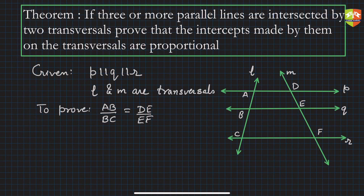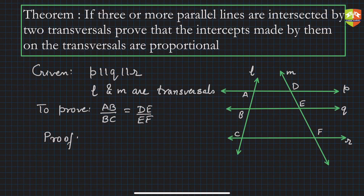Since ratios are involved, the best tool in our toolkit is the Basic Proportionality Theorem (BPT). Let's try to prove this using BPT. In BPT, you need a triangle with a line parallel to the base, and then you can write the ratios equal. Here, ratios and parallel lines are present, so we need to find an appropriate triangle to apply BPT.